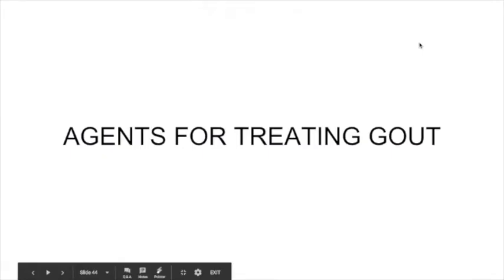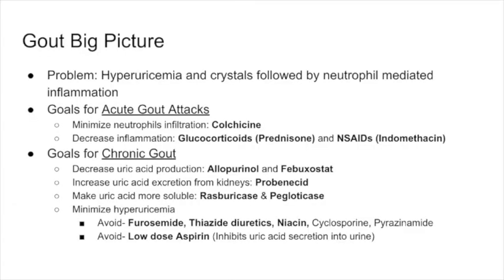Welcome back to our second to last pharmacology review. Today our topic is gout. For a big picture overview, the problem in gout is two things: first is hyperuricemia — a lot of uric acid in the blood causing crystals — and those crystals deposit and cause inflammation, which is mediated by neutrophils.